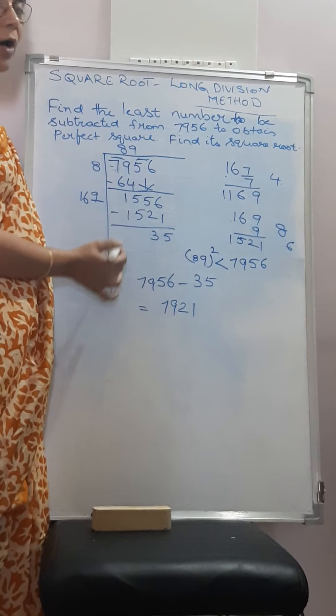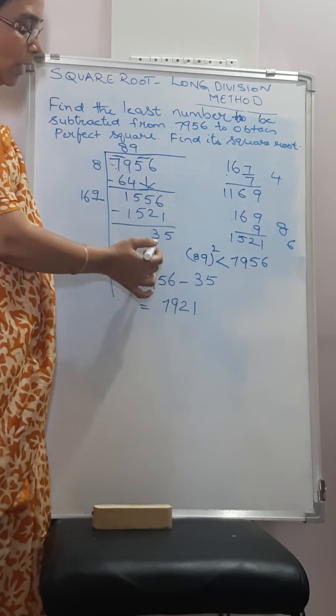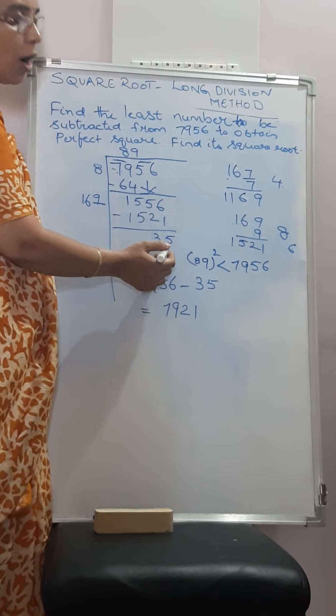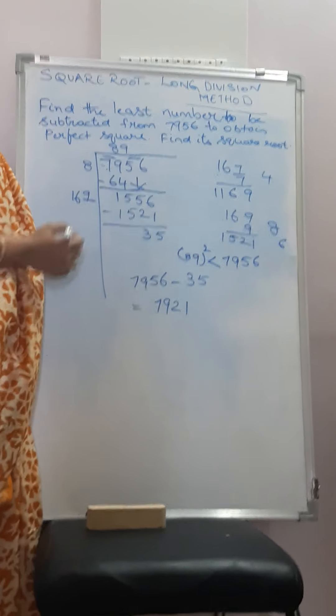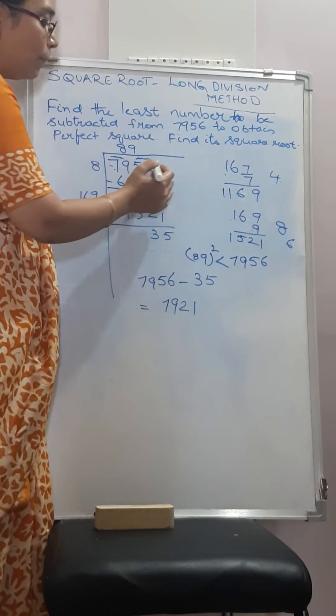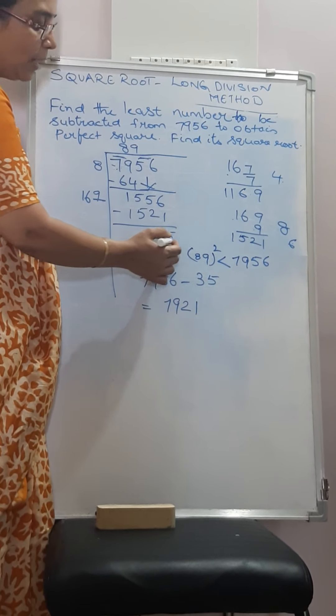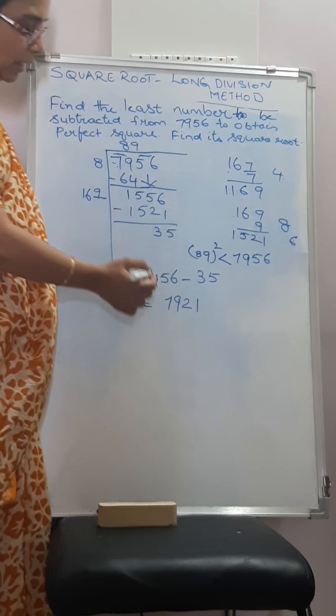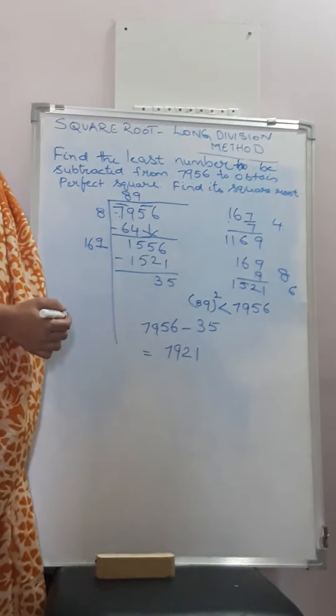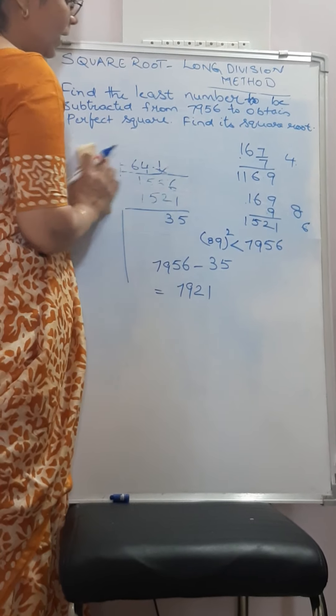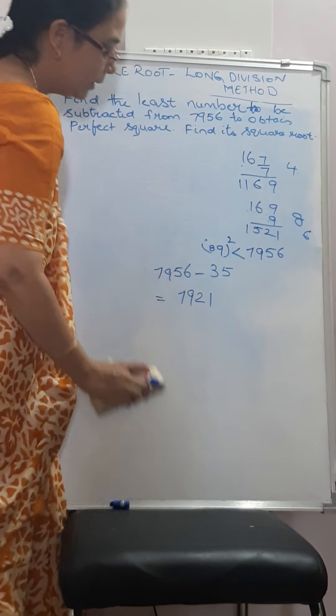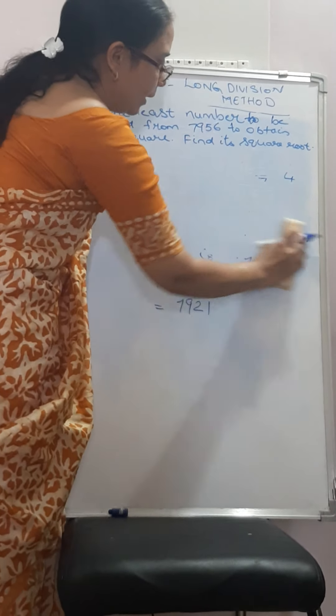How did we get it? We do the long division method. When we are doing the long division method, we will not get the remainder 0. That means this is not a perfect square number. Now from that perfect square number, we will subtract the remainder which will give us a number which is a perfect square.